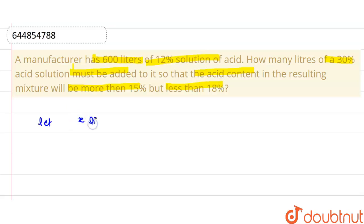Let x liters of 30% acid solution be mixed with 600 liters of 12% solution. Now, the total mixture will be formed.